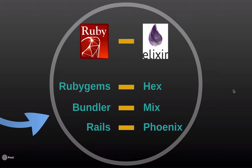The Elixir community has a framework named Phoenix for web application development. Phoenix is not quite equivalent to Rails. It is not as complex, partly because it is new and partly by design. Rails applications typically are large and monolithic — that is, one program tries to do everything.